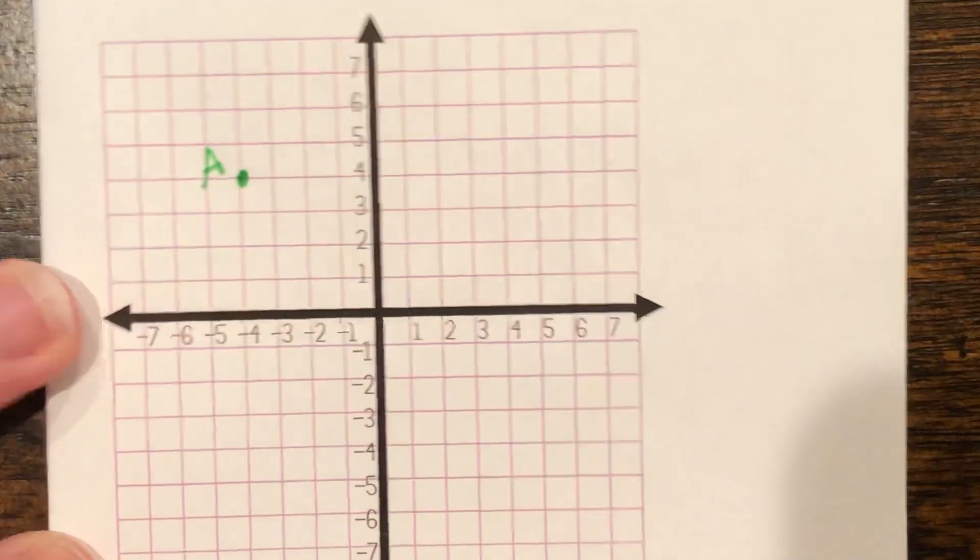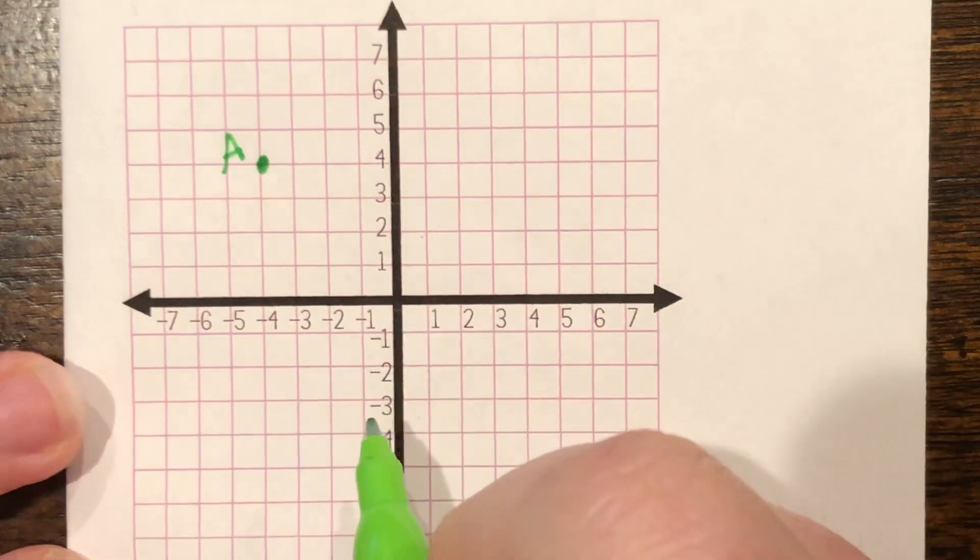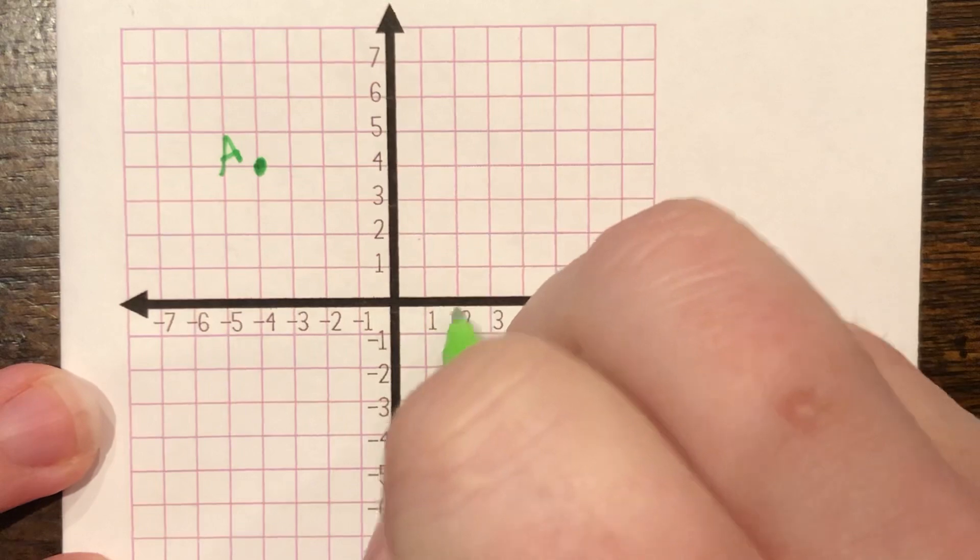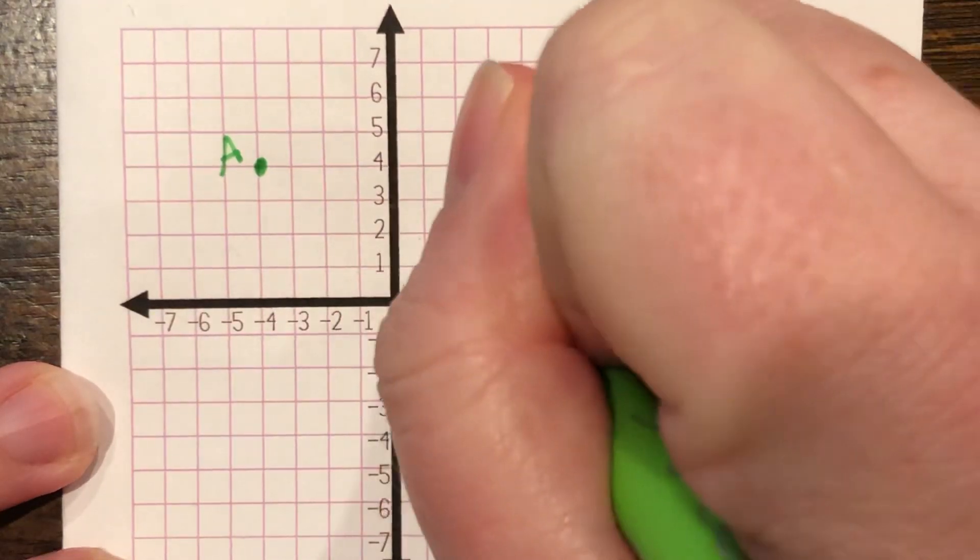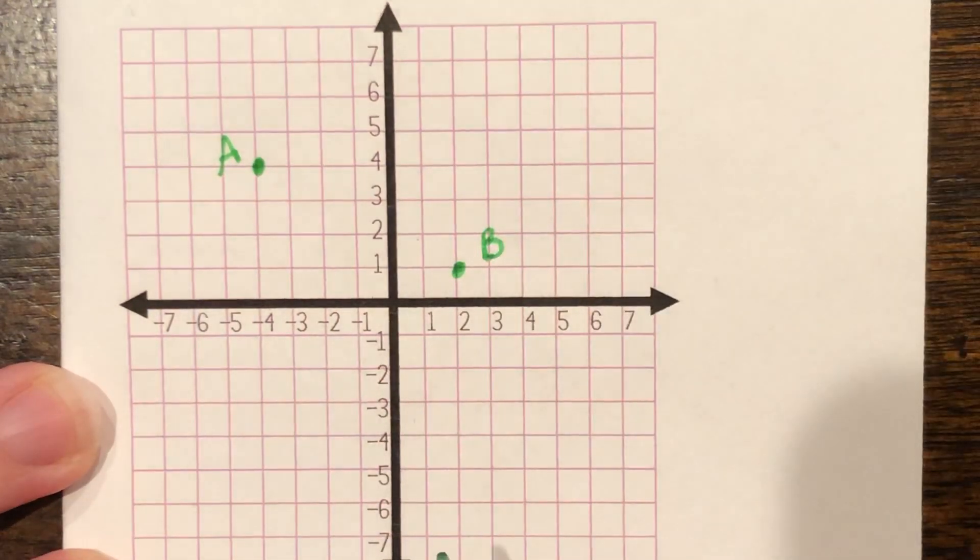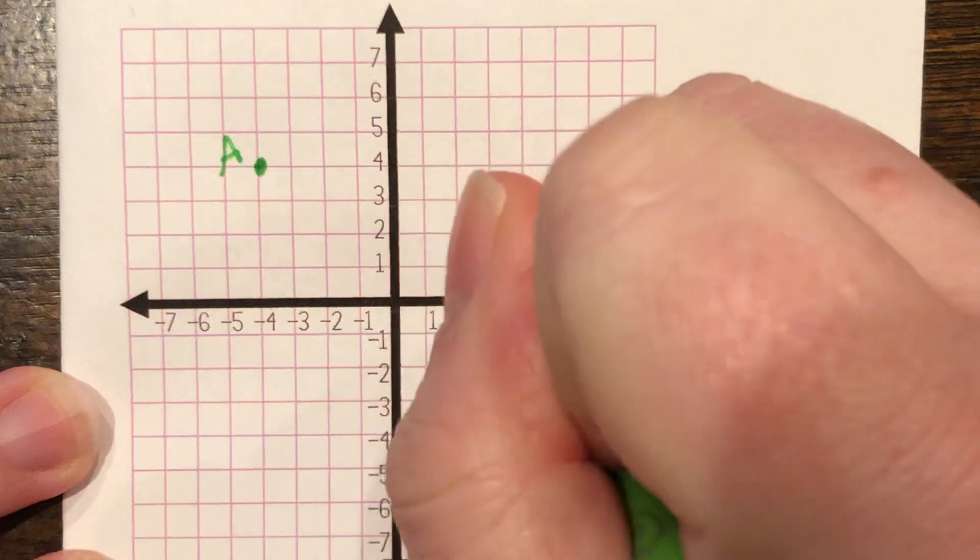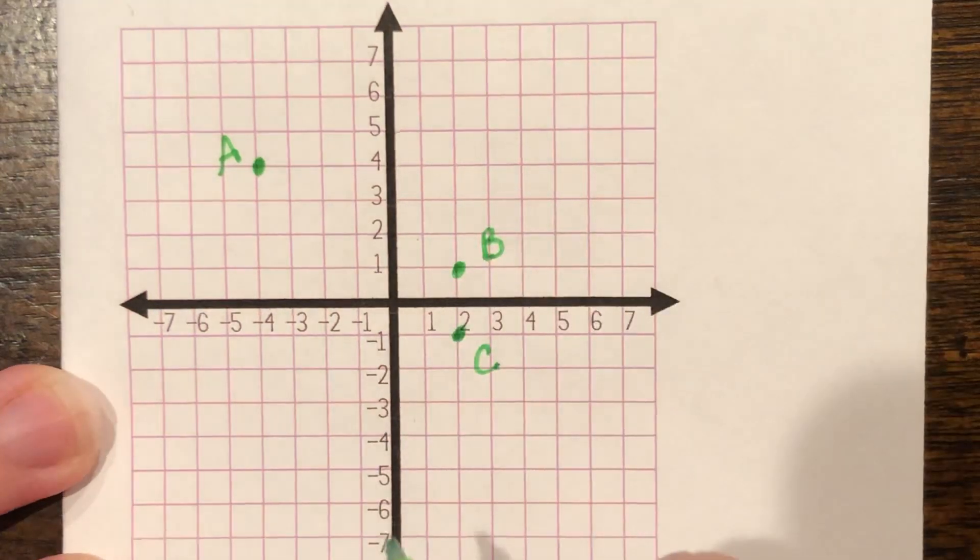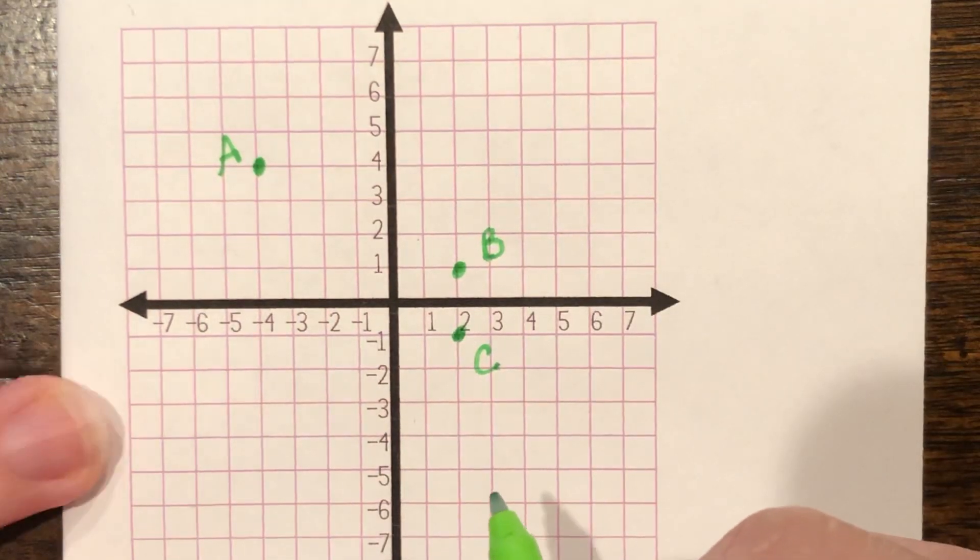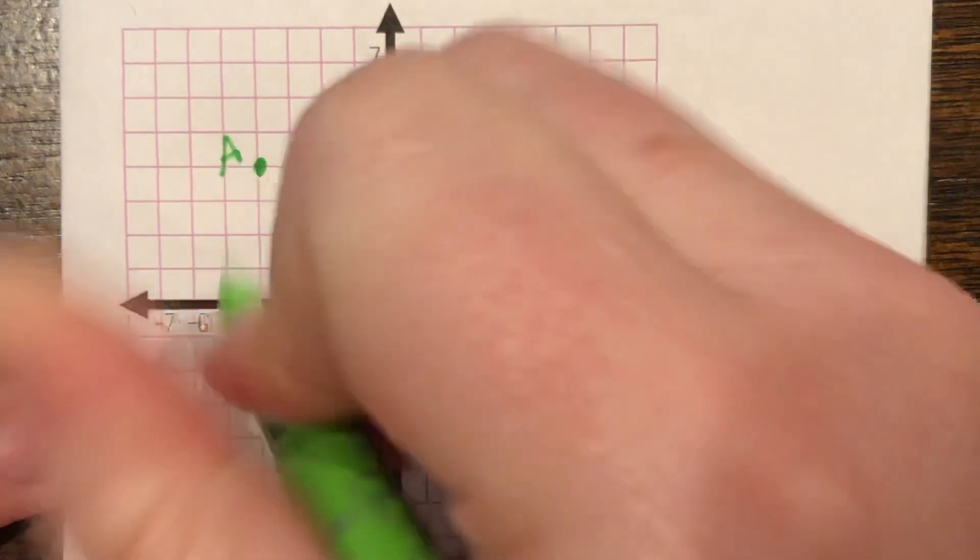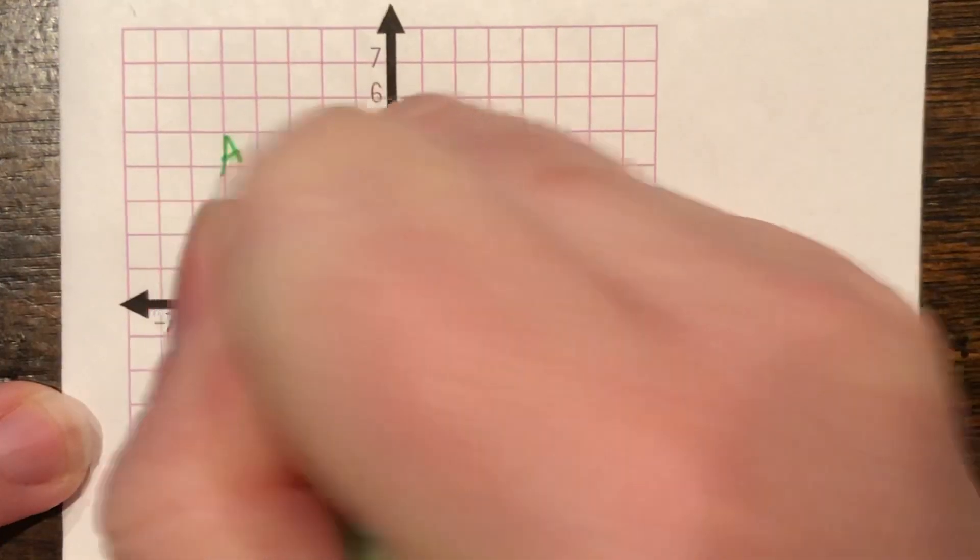Then we have 2, 1. We have both positive numbers, so we're going to go right and up. 1, 2, 1. That's point B. Okay, we have 2 negative 1, so we're going to go right and down. 2, negative 1. That's point D. Okay, and then let's go ahead and connect our points.